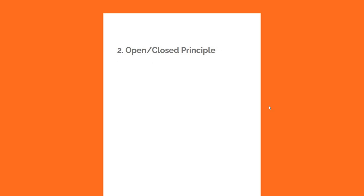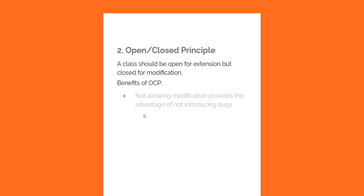The next principle is Open-Closed Principle. Open-Closed Principle says that a class should be open for extension but closed for modification. By not allowing modification, you gain the advantage of not introducing bugs into existing code. Additionally, all dependent classes will not have to adapt to the modification — those are the fundamental benefits of Open-Closed Principle.